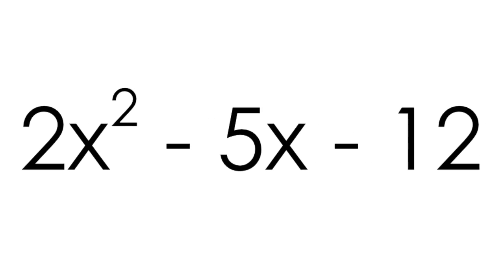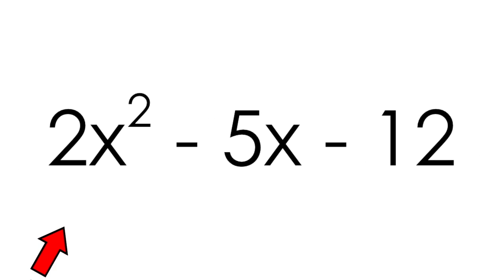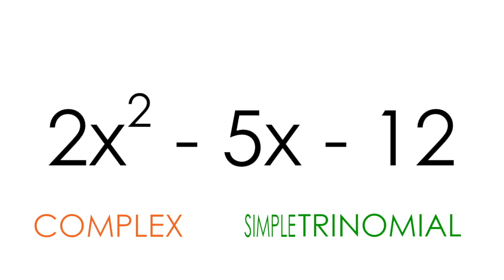You come across a trinomial that looks like this. You notice that the value of a, or the coefficient in front of x squared, is equal to 2, not 1, making this a complex trinomial that can't be factored using simple trinomial factoring.